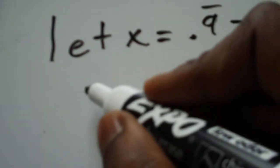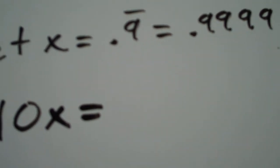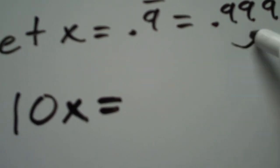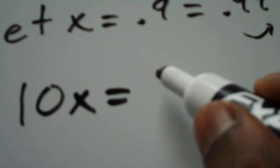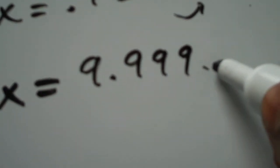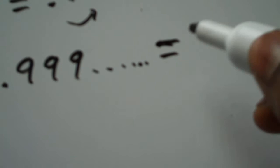Okay, so now ten times x equals - well, anytime you multiply a number by ten, you just move the digit over one place, so it equals nine point nine nine nine to infinity, which is nine point nine repeating.